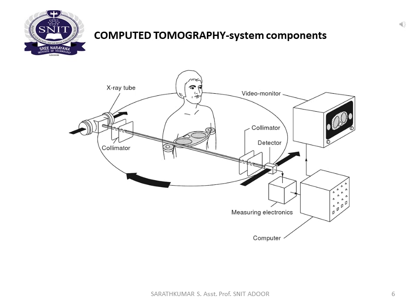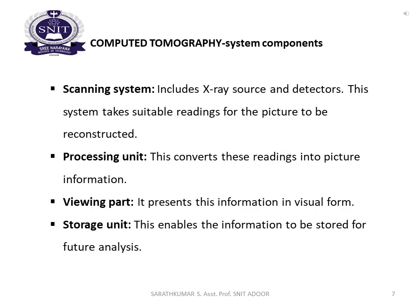The system components in computer tomography include: X-ray tube, collimator, video monitor, detector, measuring electronics, and a computer with display unit. The scanning system includes the X-ray source and detectors, which take readings for the picture to be reconstructed. The processing unit converts the readings into picture information. The viewing part presents the information in a visual format. The storage unit enables the information to be stored for future analysis.